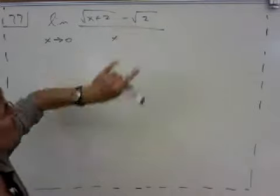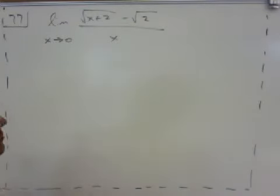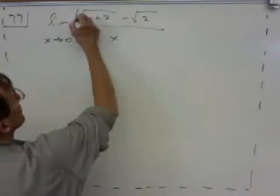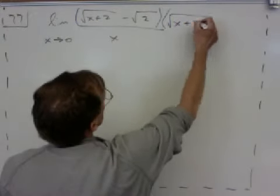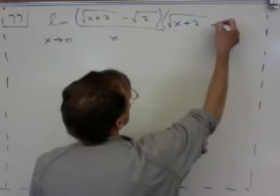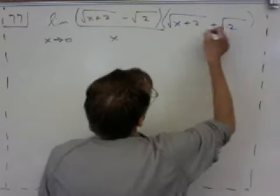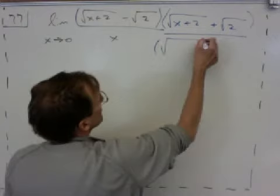So you've got radicals in the numerator, so my first guess would be see if we can get rid of those radicals by rationalizing the numerator. So I'm going to multiply by the conjugate, root x plus 2 plus root 2. I have to multiply the denominator by that same thing.